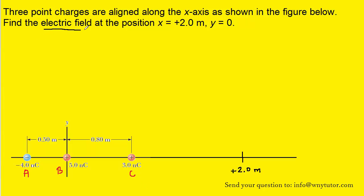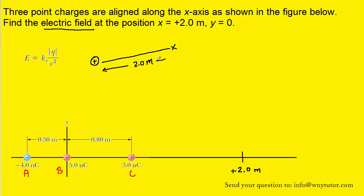In order to calculate the electric field produced by any point charge, we have to use the following equation. We have the magnitude of the electric field equaling the Coulomb constant multiplied by the absolute value of the charge, divided by a particular distance. That distance will be the distance from your charge to wherever it is you're trying to calculate the electric field. So if you were attempting to calculate the electric field at a distance of 2 meters from a positive charge, then the R value would be 2 meters.